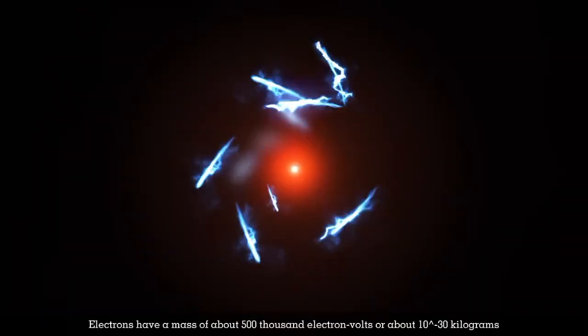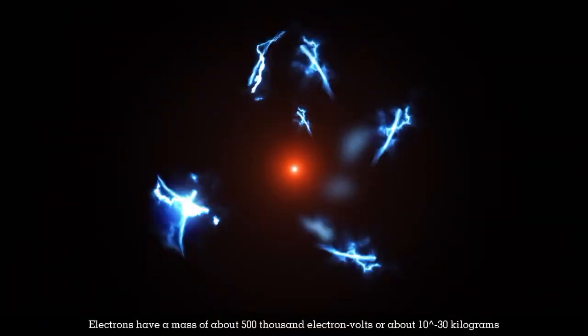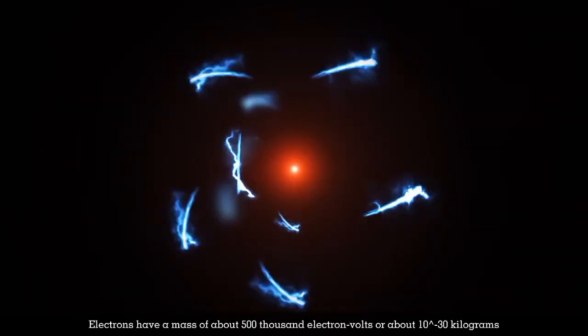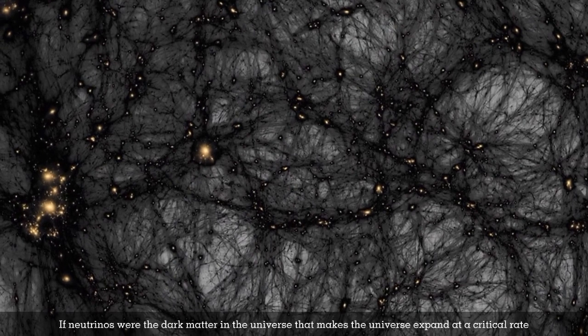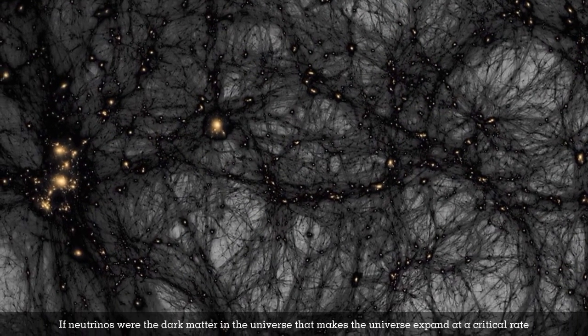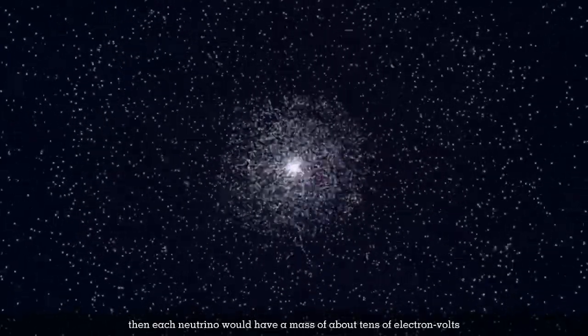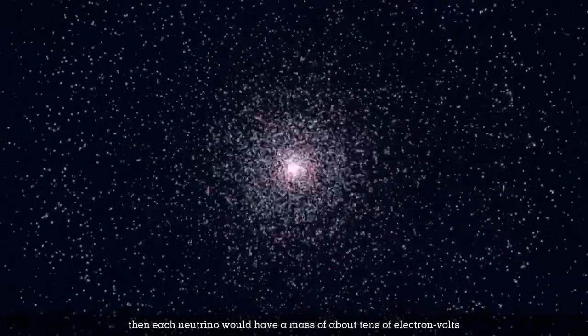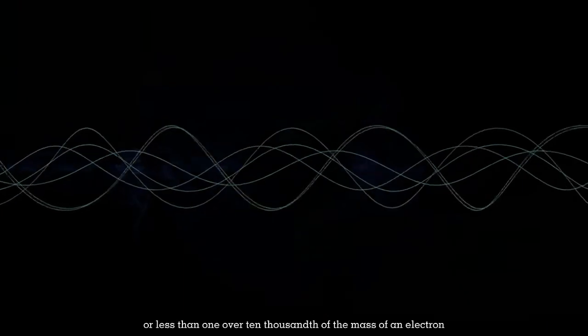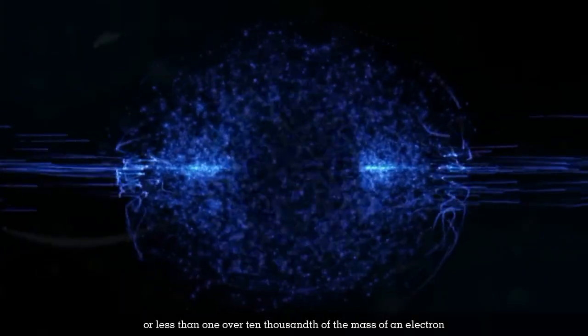Electrons have a mass of about 500,000 electron volts, or about 10^-30 kilograms. If neutrinos were the dark matter making the universe expand at a critical rate, each neutrino would have a mass of about tens of electron volts, or less than 1/10,000th of an electron's mass.